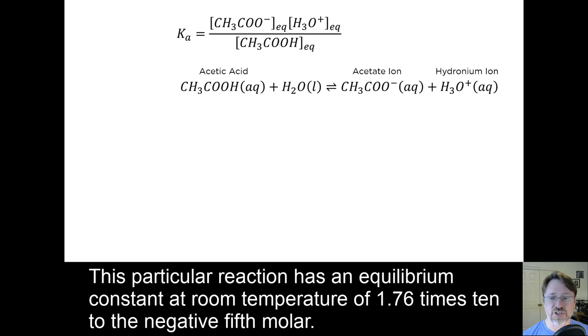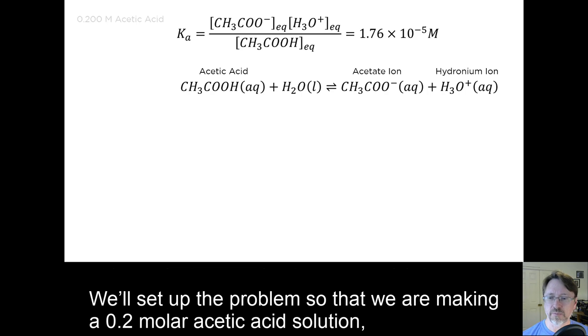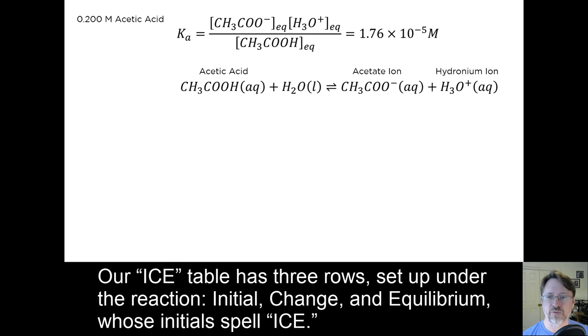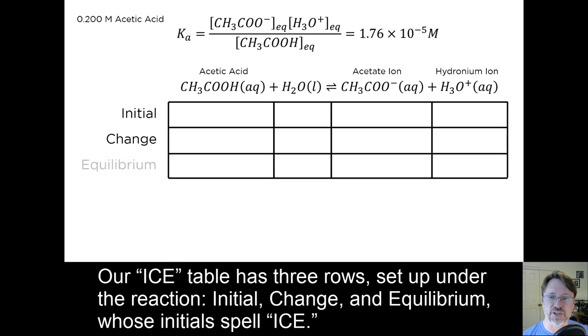This particular reaction has an equilibrium constant at room temperature of 1.7 times 10 to the negative fifth molar. We'll set up the problem so that we are making a 0.2 molar acetic acid solution, and we want to know what the hydronium ion concentration will be. Our ICE table has three rows, set up under the reaction: